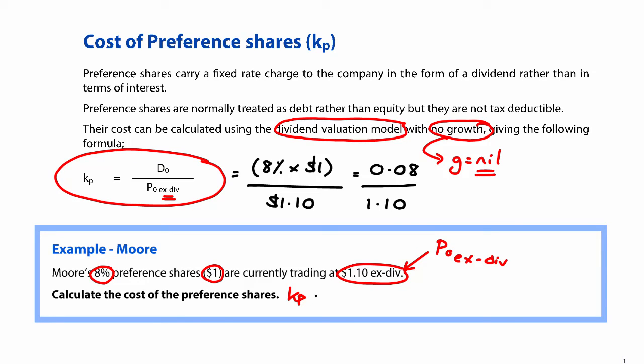And if you work that through, it should give you 7.3% as you multiply the answer by 100 to convert the decimal into a percentage. That's it. It's no more difficult than that.